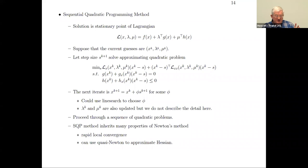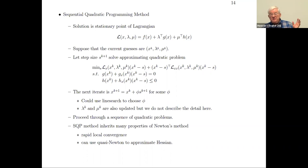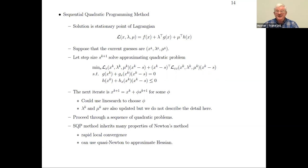The first person to write about sequential quadratic programming was Bob Wilson in his 1964 PhD thesis at Harvard in the applied math department. Bob Wilson was a major contributor to this literature and is always cited in the history of the SQP method. His initial contribution addressed the convex case, but the idea was the sequential quadratic programming method.